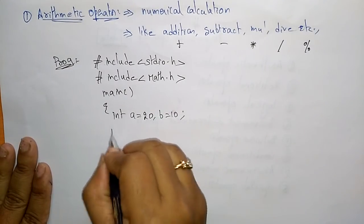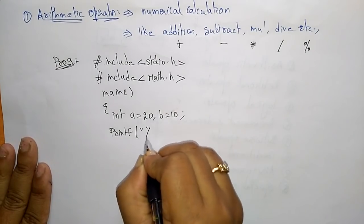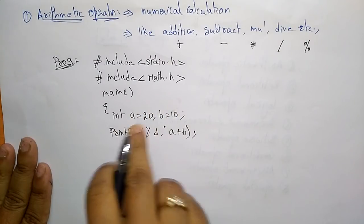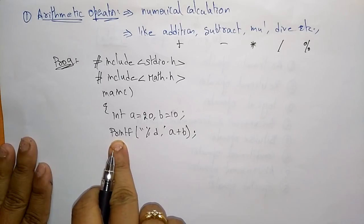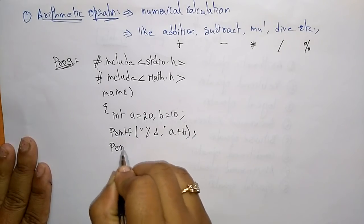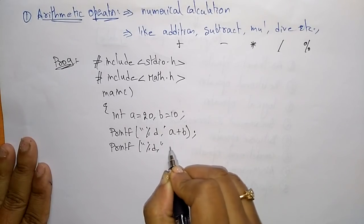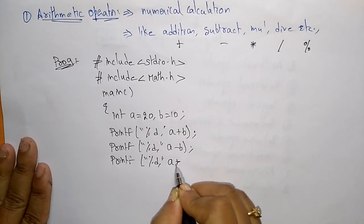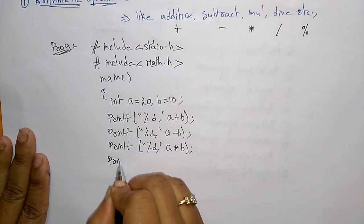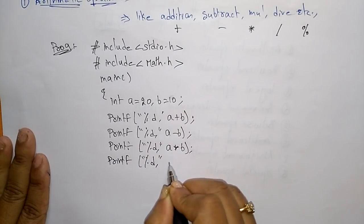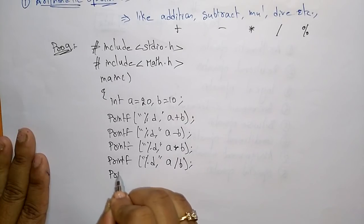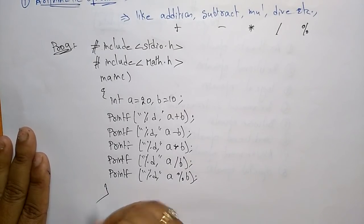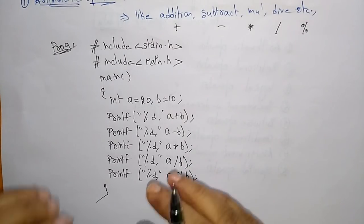Now printf with format specifier %d for a plus b — this performs addition and the result is displayed on the screen. Then printf %d for a minus b. Then printf %d for a star b. Then printf %d for a slash b — that is a divided by b. Then printf %d for a modulo b. Then close the main program.